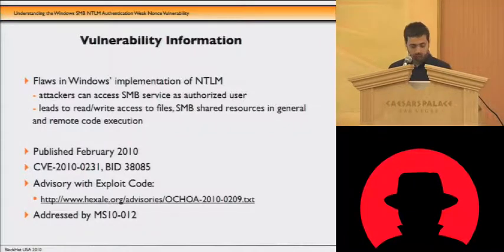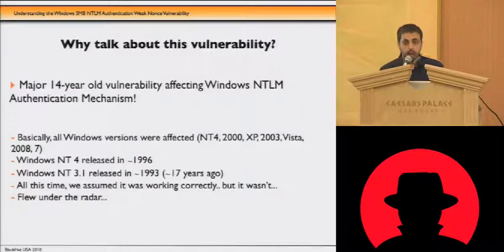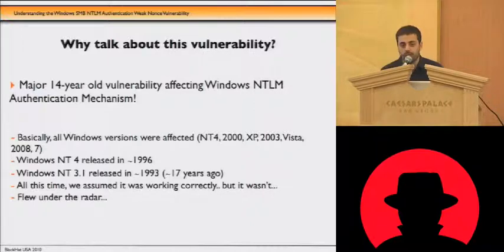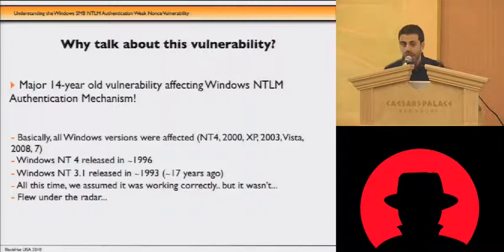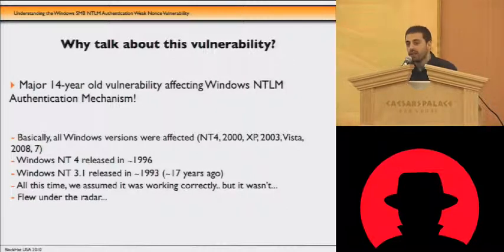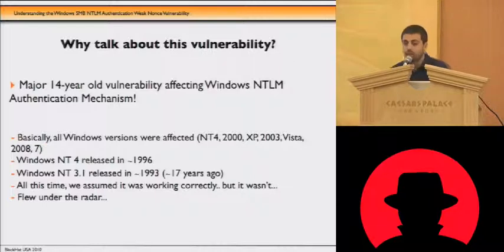Why do we think it's worth talking about this vulnerability? Basically, the flaws we found are in the implementation of NTLM, which is the most widely used authentication protocol in the world, and they have been there for not just 14 but actually 17 years. This means that since Microsoft shipped the first version of Windows NT — Windows NT 3.1 — up until February of this year, the NTLM authentication protocol has been seriously flawed.